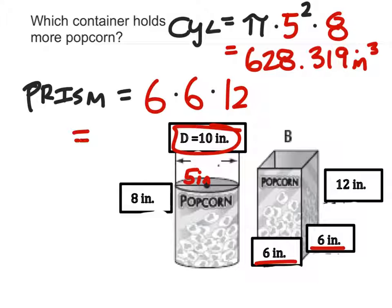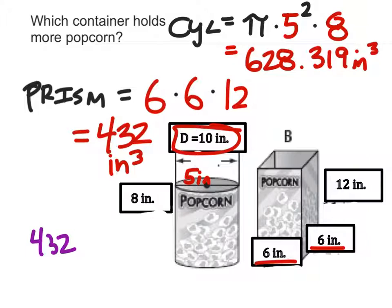So what do we get when we multiply all of these? Well, that's very nice. When we compare these two numbers, we've got the prism at 432 and the cylinder at 628. We can see clearly that 628 is bigger than 432.